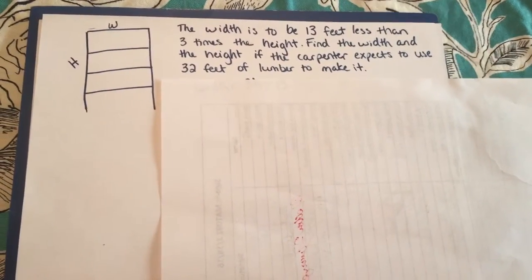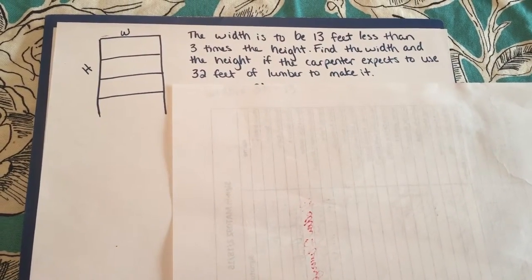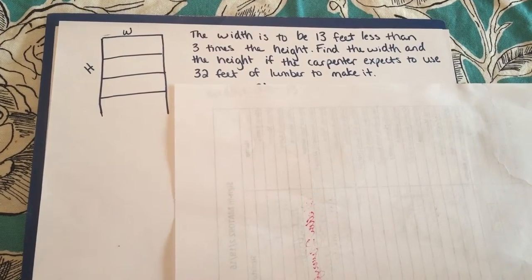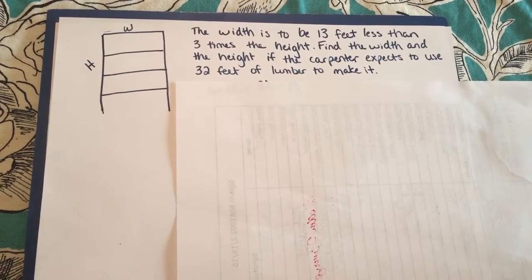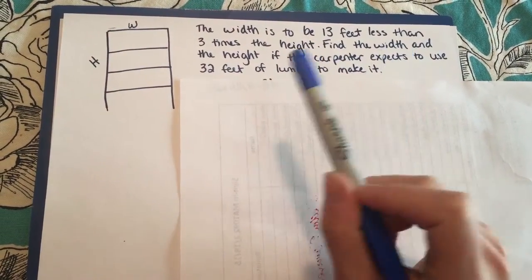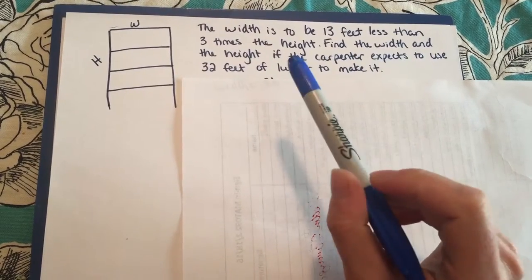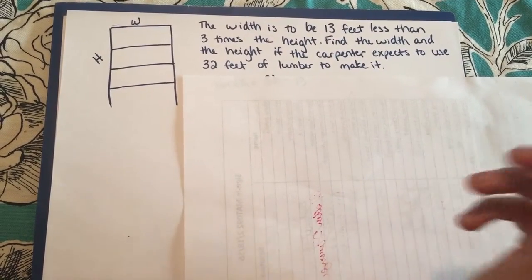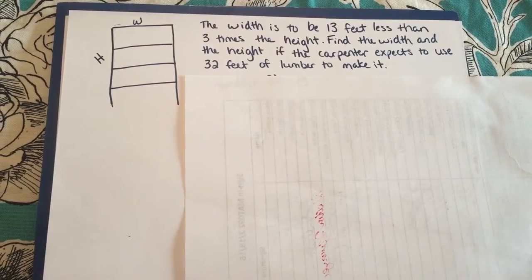Okay, this is a problem from Homework 2.5 that talks about a bookcase where we need to find the width and the height. So it says the width is to be 13 feet less than 3 times the height. Find the width and the height if the carpenter expects to use 32 feet of lumber to make it.